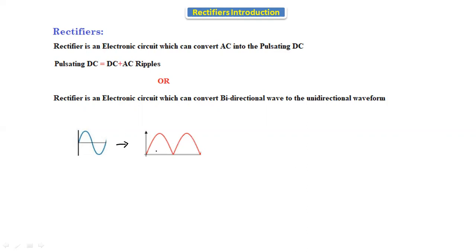In rectifiers, we will not get pure DC — we get pulsating DC. That's why the DC output contains DC plus AC ripples. Pure DC looks different; that pure DC we will not get directly from the rectifier — we get pulsating DC instead.